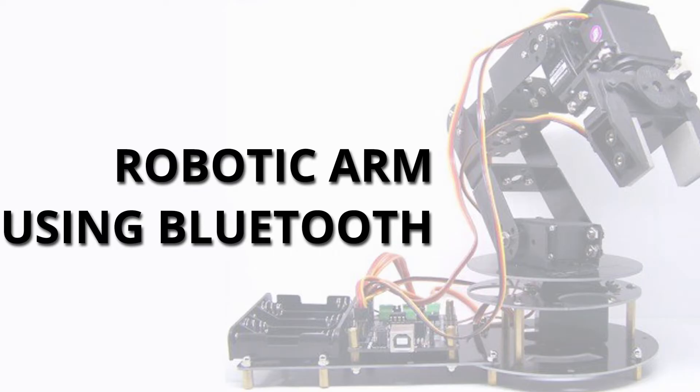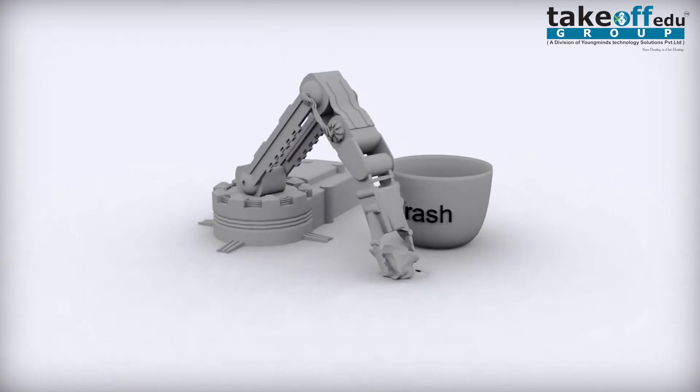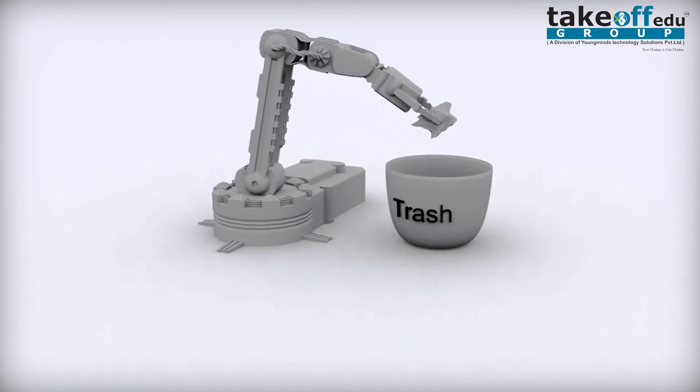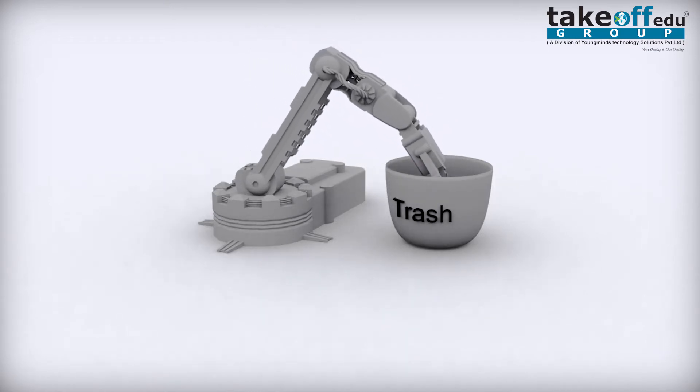An industrial robot is a robot system used for manufacturing. Industrial robots are automated, programmable and capable of movement on two or more axes.